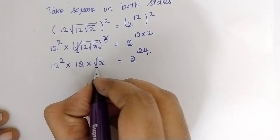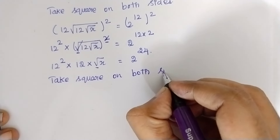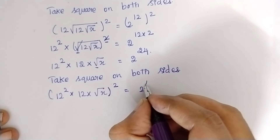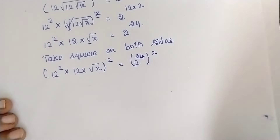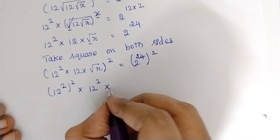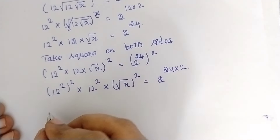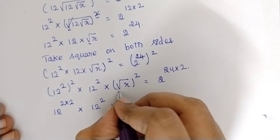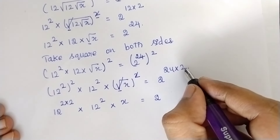Now we need to remove the square root, so again take square on both sides. By squaring both sides: 12² squared, multiplied by 12² multiplied by (√x)², which is equal to 2^(24×2). The square root and square cancel, giving 12² multiplied by 12² multiplied by x = 2^48. Simplifying: 2^4 multiplied by 2^2 multiplied by x = 2^48.